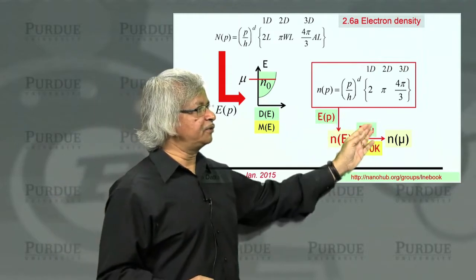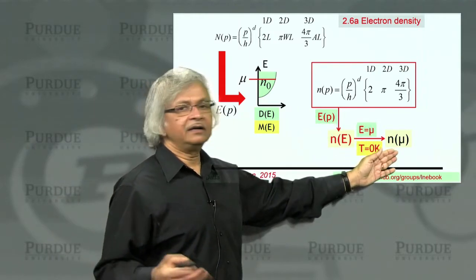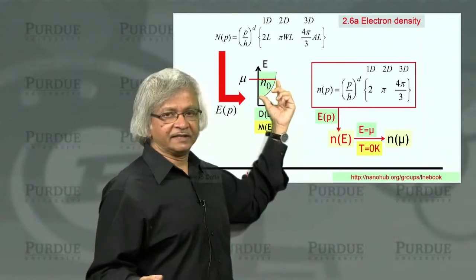So at 0 Kelvin, if I put E equals mu, I'll get the correct number of electrons, the electron density.